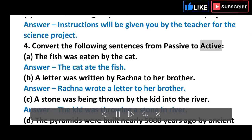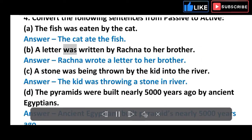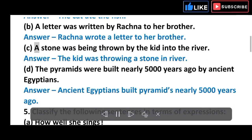Convert the following sentences from passive to active: (a) The fish was eaten by the cat. Answer: The cat ate the fish. (b) A letter was written by Rachna to her brother. Answer: Rachna wrote a letter to her brother. (c) A stone was being thrown by the kid into the river. Answer: The kid was throwing the stone in river.